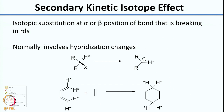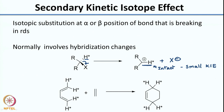Secondary kinetic isotope effects normally involve hybridization changes. For example, you have substitution at a hydrogen for an SP3 reactant. Once X leaves, you generate the carbocation and X⁻. Now the C-H bond is still intact. As we had seen in examples from the previous class, what you observe is a small kinetic isotope effect. Some of you might wonder: although this bond is not breaking, why do you see a kinetic isotope effect at all? One would assume that since the bond is not breaking, it does not matter whether you put C-H or C-D.